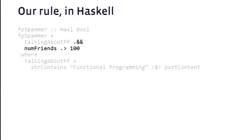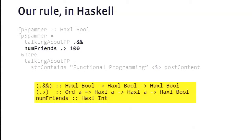For the number of friends, we have an operation numFriends that returns an Int and is a computation in the Haxl monad. We make our condition out of numFriends greater than 100. We can't use the ordinary greater-than operator since that operates on integers, so we have a lifted version called (.>) that operates on computations of type Haxl a where a is orderable, returning a Bool. To combine conditions — talking_about_fp and numFriends — we need an AND operator. We have a special version called (.&&) which takes Haxl computations, giving us more concise syntax.